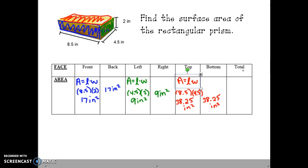Now to find the total area or the sum of all of these individual areas, we can either add up each one individually. So 17 plus 17 plus 9 plus 9 plus 38.25 plus 38.25 or equivalently we could write 2 times 17 plus 2 times 9 plus 2 times 38.25 and evaluate this using order of operations. So 2 times 17 gives us 34 square inches for the front and the back faces plus 2 times 9 gives us 18 square inches for the left and the right faces plus 2 times 38.25 gives us 76.5 square inches for the top and the bottom faces.